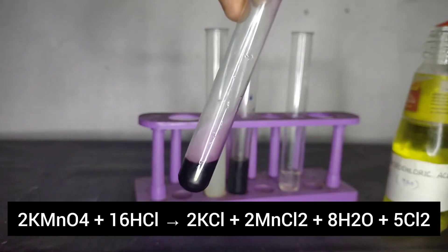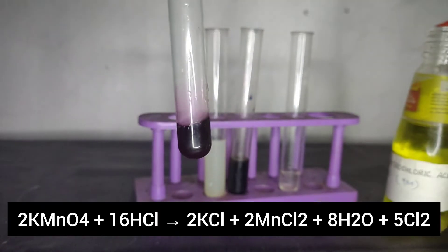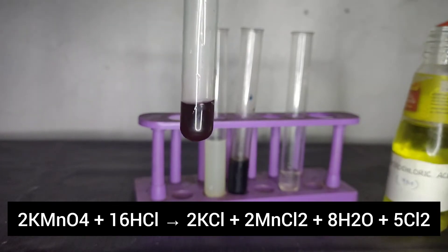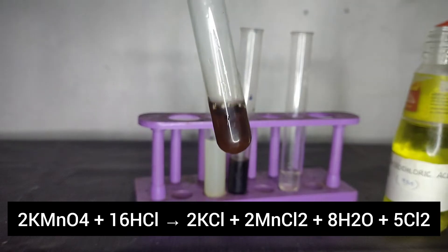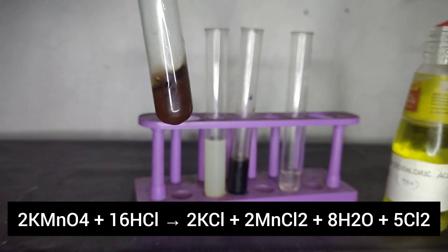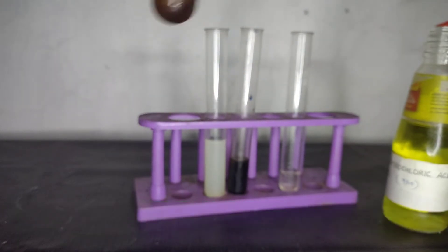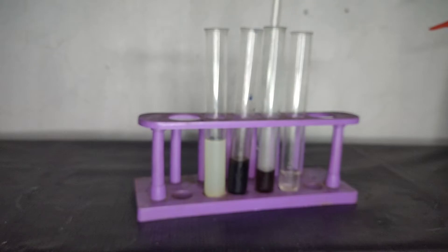Add concentrated hydrochloric acid until the color of potassium permanganate lightens. Now our chlorine water is ready. Add this chlorine water drop wise into this solution.